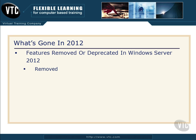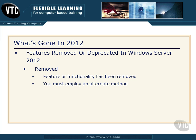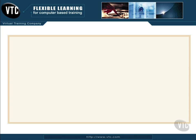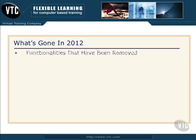First of all, let's talk about these terms. When Microsoft says a feature has been removed, that means it has been removed — it's no longer functioning, and if you want the same functionality, you'll have to employ some alternate method. When they say deprecated, that means it's still available in this release — a friendly reminder, a little warning that this is going to go away at some point in the future, so you need to start planning now for how you're going to work around it when it finally goes away.